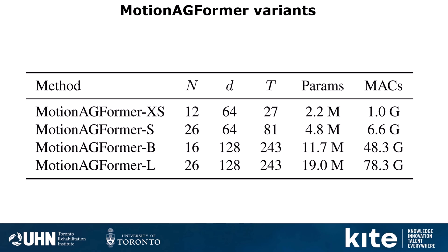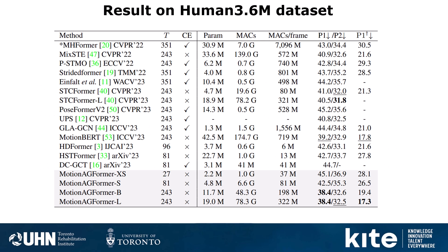Regarding Motion AGFormer variants, we propose four different variants which can be chosen based on a speed-accuracy trade-off. The differences are in the number of AGFormer blocks, channel dimension, and number of frames, resulting in different parameter counts and multiply-accumulate operations. Comparing results on the Human3.6M dataset without pre-training on additional data, Motion AGFormer achieves better P1 error (mean per joint position error) compared to other recent models, while also having fewer parameters and fewer multiply-accumulate operations.